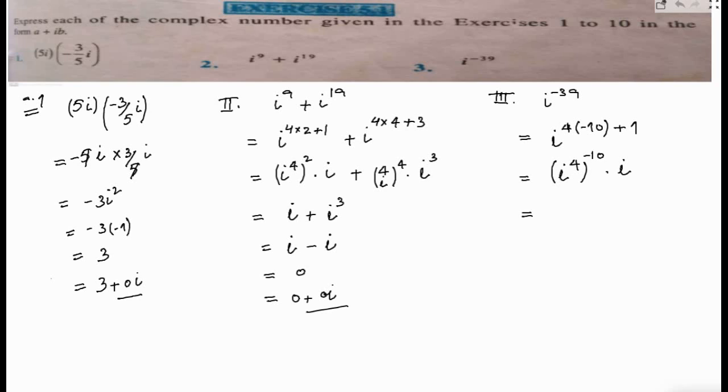Iota to the power 4 is 1, so 1 to the power negative 10 is 1 again, so the answer is iota. To write this in standard form, I will write 0 plus iota, which is the standard form.